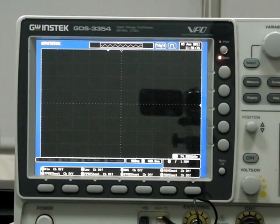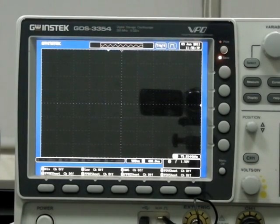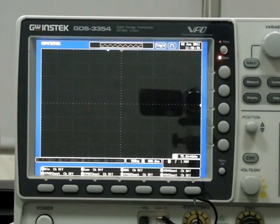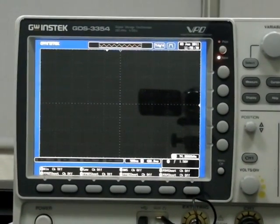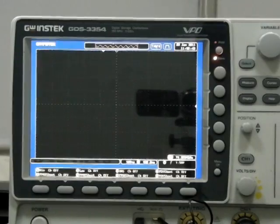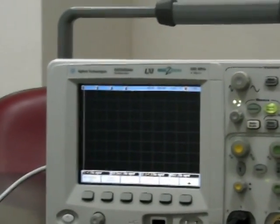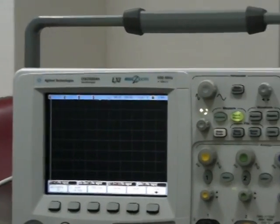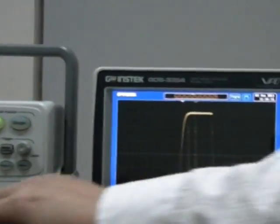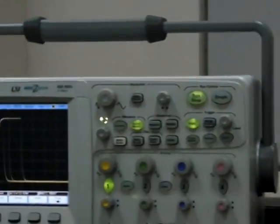Today we will introduce the GW-INSTEK GDS-3000 and compare its functions to the Agilent DS-05000 in a series of demonstrations. Connect a burst waveform to channel 1 on each of the two devices and turn channel 1 on for both devices.